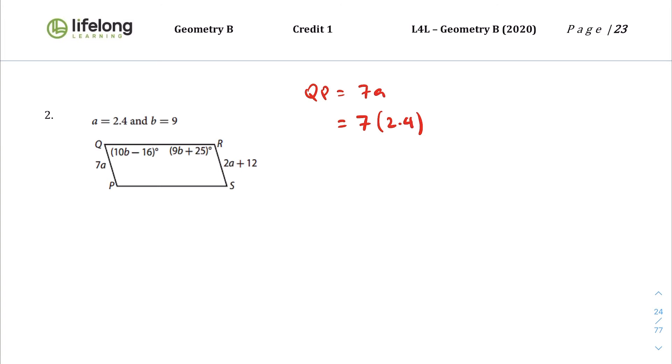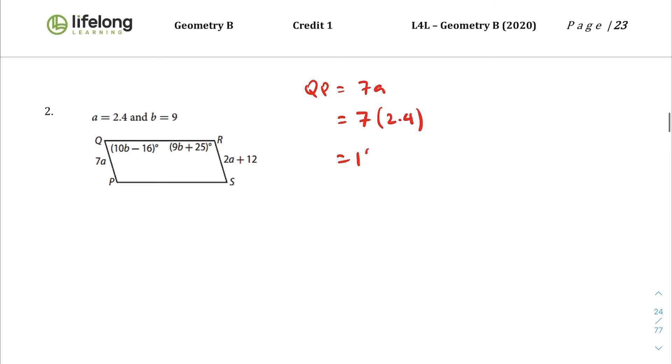So 7 times 2.4, what is that, 16.8. And then RS is the opposite side, 2a plus 12, 2 times 2.4 plus 12, how is that, 4.8 plus 12, 16.8. So QP and RS are congruent.